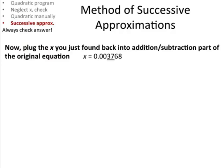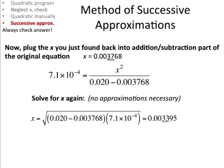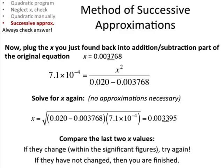Now what you do is you plug the x back into the addition-subtraction part of the original equation. Before it was .020 minus x in the denominator, and now you just plug x right in there. But not on the top, because now you're going to solve for x on the top. The one that's multiplied all together, you solve for that on the top. And you get this value for x. And again, you're not approximating here, you're just taking x and plugging it in. You get a new value for x. It's different, which makes sense.